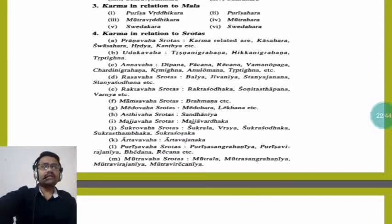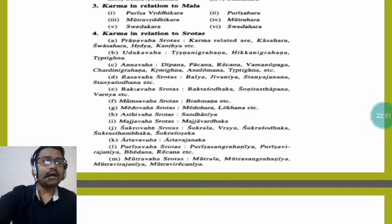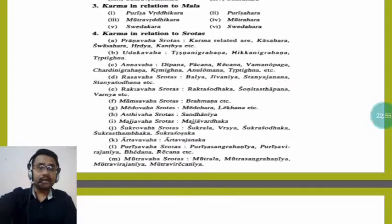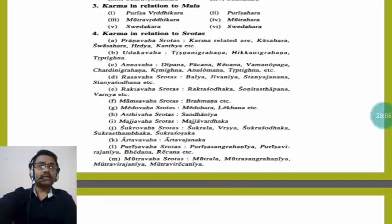Now Karma in relation to Srotas. The first is Pranavaha Srotas; Karmas related are Kasahara, Swasahara, Hridya, and Kanthya. These Karmas are related to Pranavaha Srotas. Udakavaha Srotas include Trishnanigrahana, Hikkanigrahana, and Triptighna.